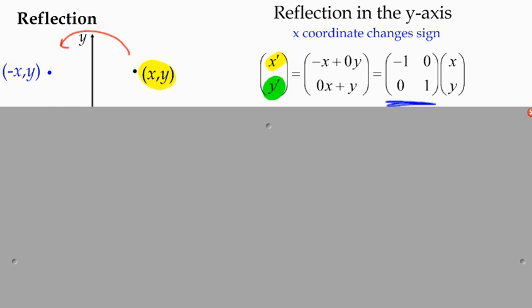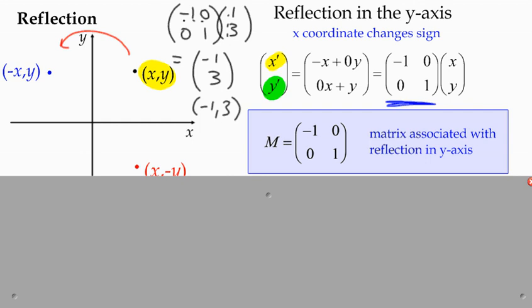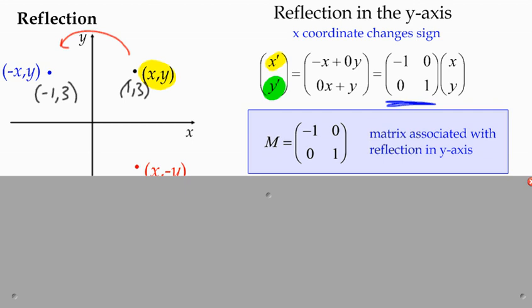So this matrix — negative 1, 0, 0, 1 — is a fixed matrix for reflecting any point in the y-axis. For instance, taking the point 1, 3 and multiplying by this transformation matrix gives negative 1 times 1 plus 0 equals negative 1, and 0 plus 1 times 3 equals 3. So the image is negative 1, 3, which is exactly the reflection of 1, 3 in the y-axis. That matrix is a fixed matrix representing a reflection in the y-axis.